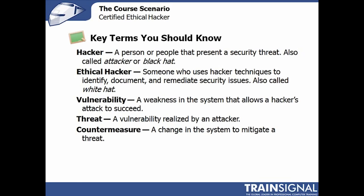Vulnerability, threat, and countermeasure really go together nicely. A vulnerability is simply a weakness in a system that allows an attack to succeed — some type of weakness anywhere in the system. Sometimes it's a network protocol, sometimes it's an open port, sometimes it's a misconfigured service, and sometimes it's poorly written code.